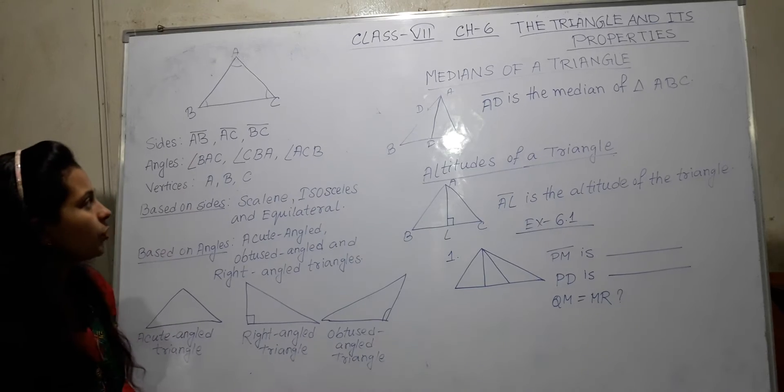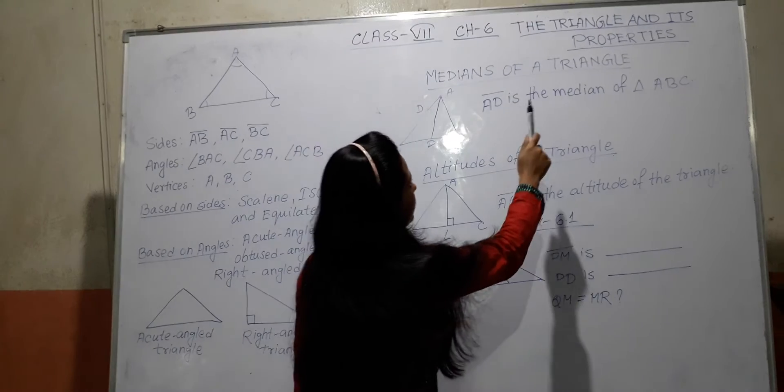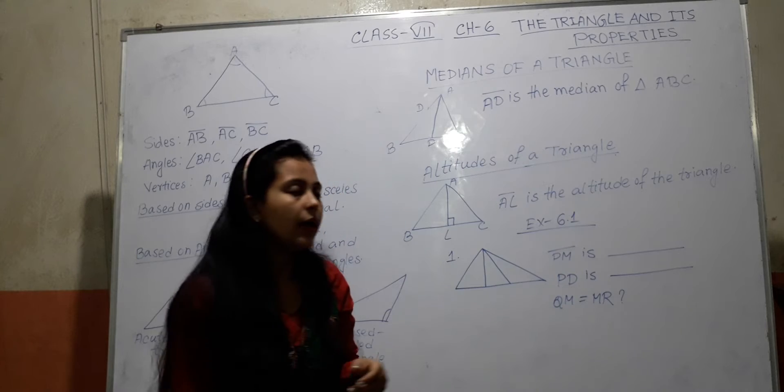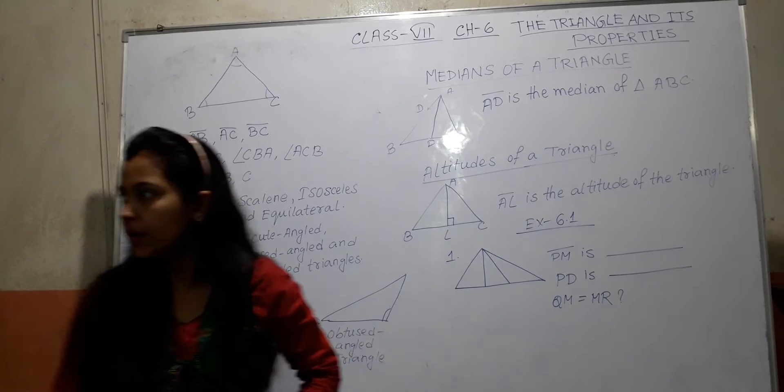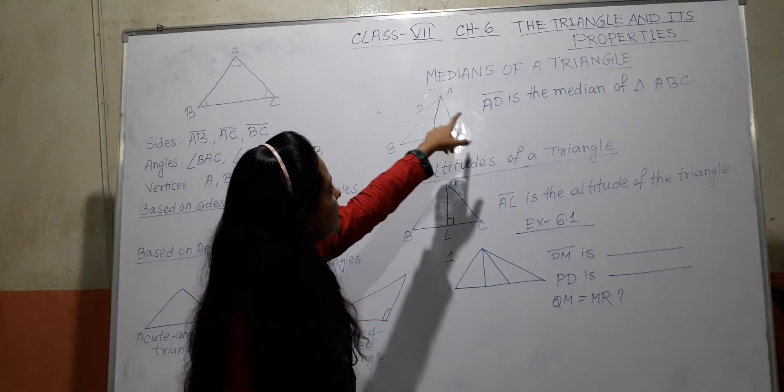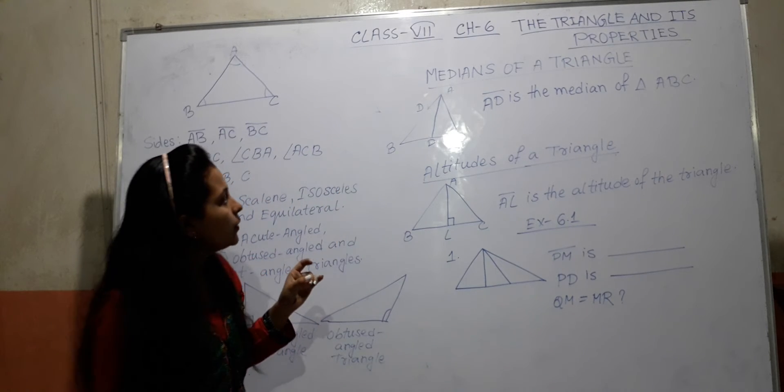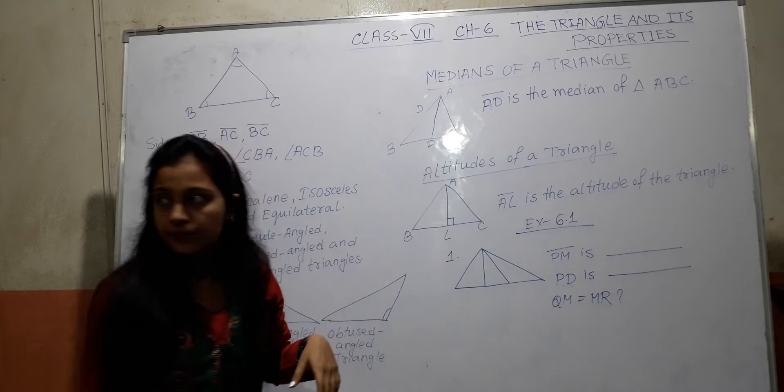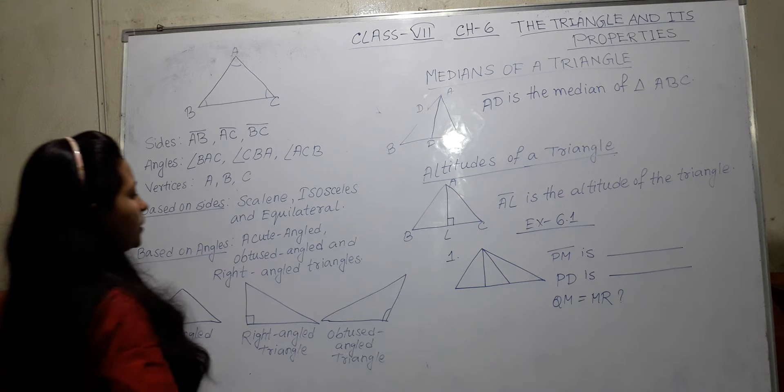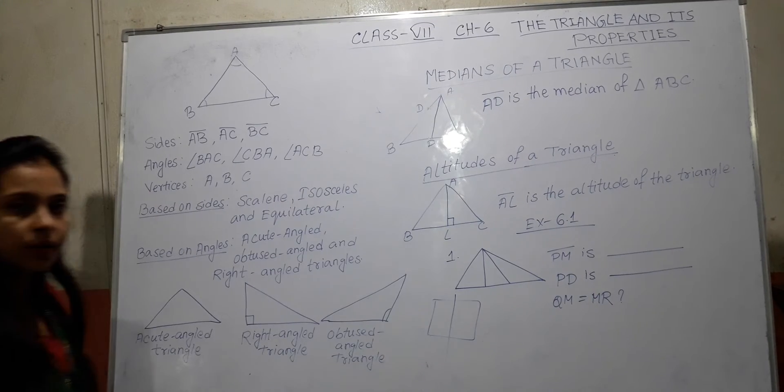Now our new topic, the properties topic is medians of a triangle. From the term medians, from probability chapter, we know that medians means by which we can divide a triangle equally in two. This is called medians. If this is a book, this is called median.